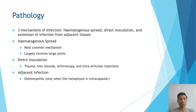The pathology involved in the cause of septic arthritis is via three mechanisms: it can either be hematogenous spread, direct inoculation, or extension of the infection from adjacent tissues.